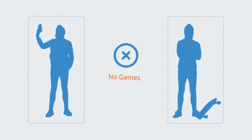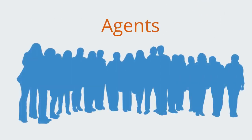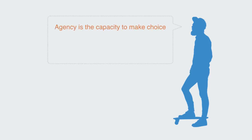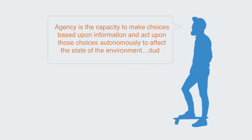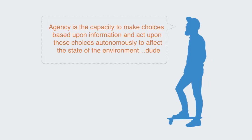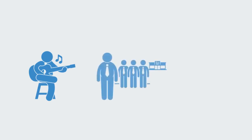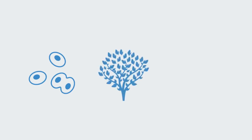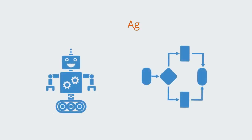Games are formed out of the interdependencies between adaptive agents. So what is an adaptive agent? An agent is any entity that has what we call agency. Agency is the capacity to make choices based upon information and act upon those choices autonomously to affect the state of their environment. Examples of agents include social agents such as individual human beings, businesses, and governments. They may be biological agents such as bacteria, plants, or animals. They may also be technologies such as robots or algorithms of various kinds.